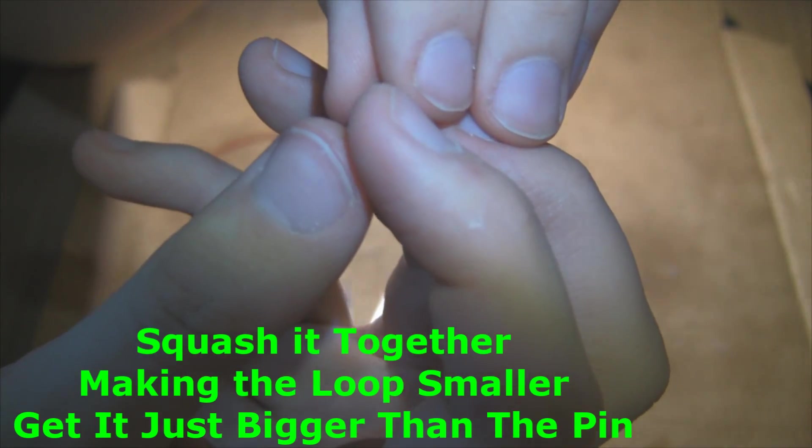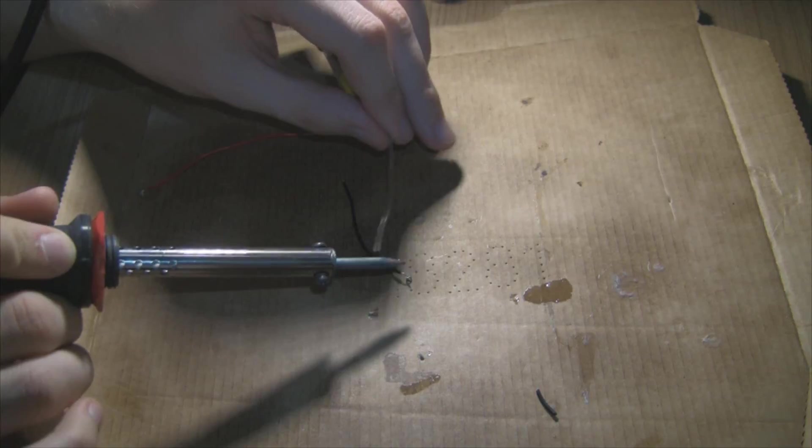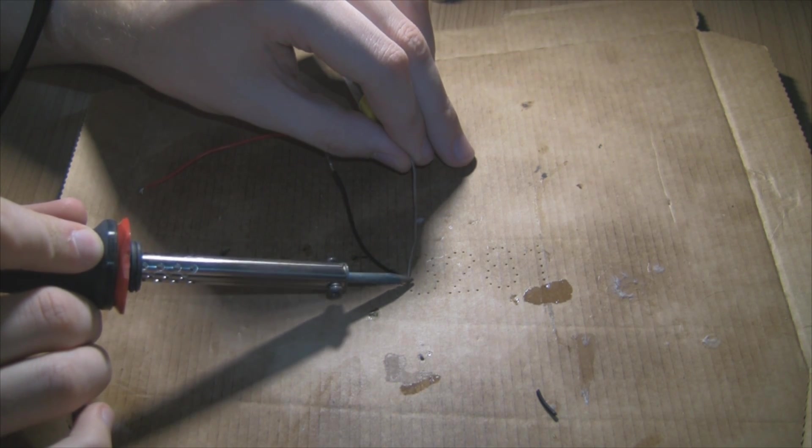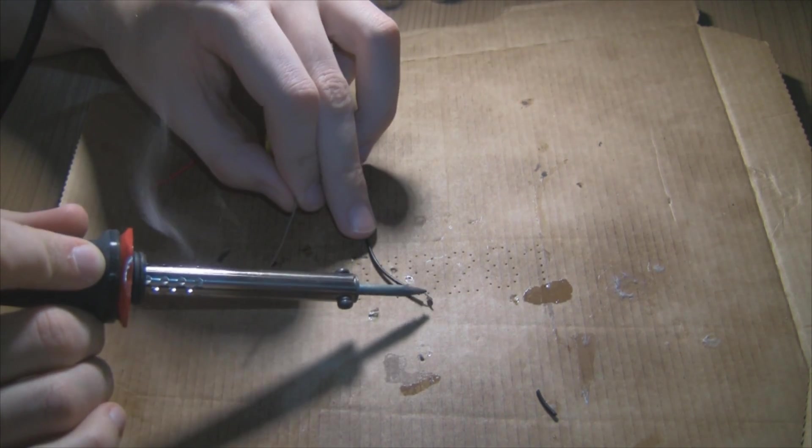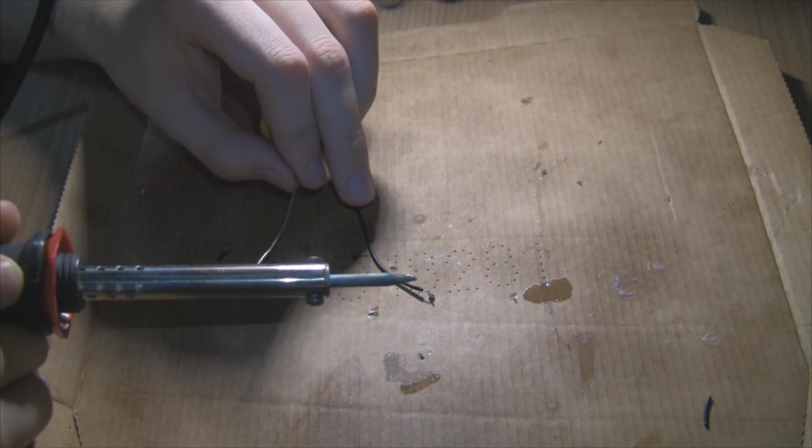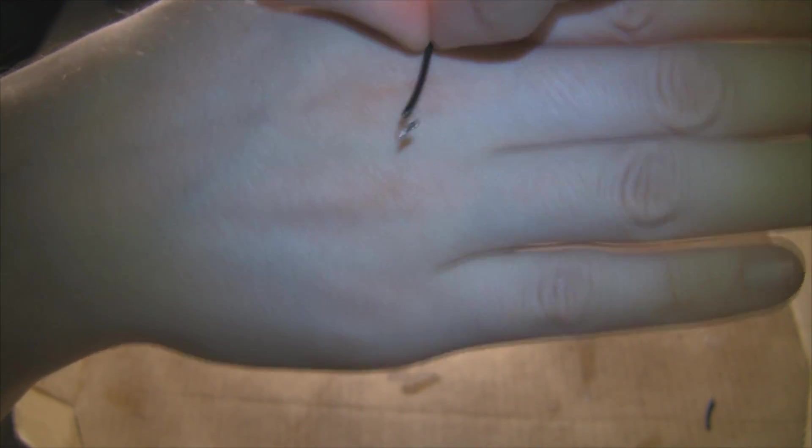So you want to take the loop and just make it a little bit smaller. Next, take your soldering iron and some solder and cover the loop in solder so there's no hole anymore. You end up with something looking like this.